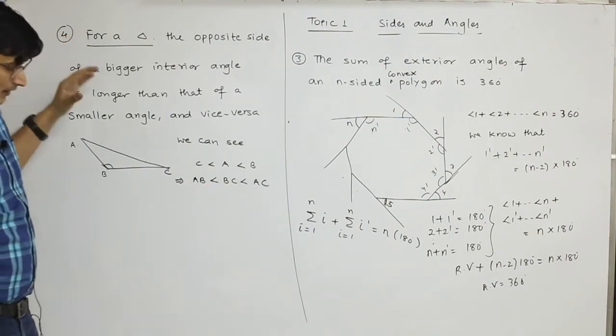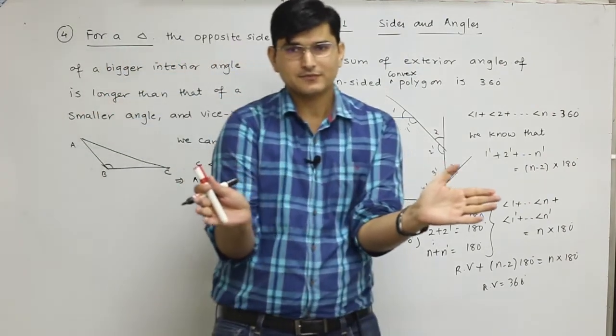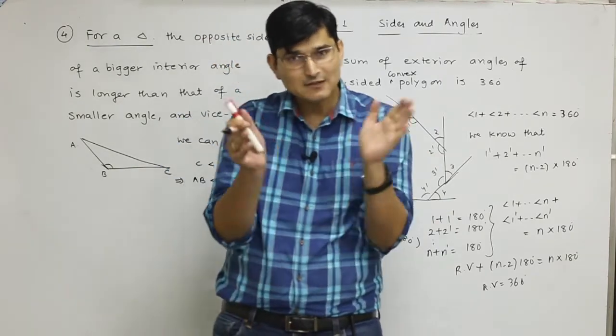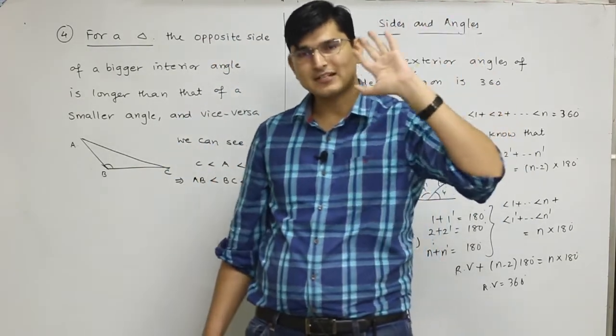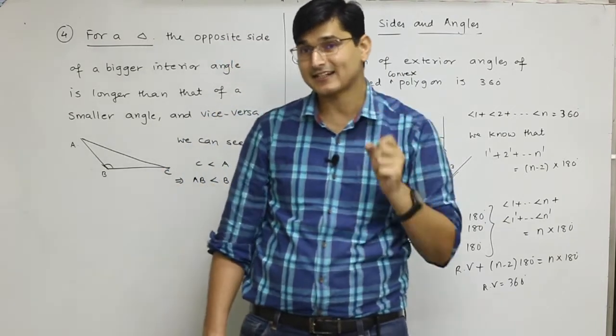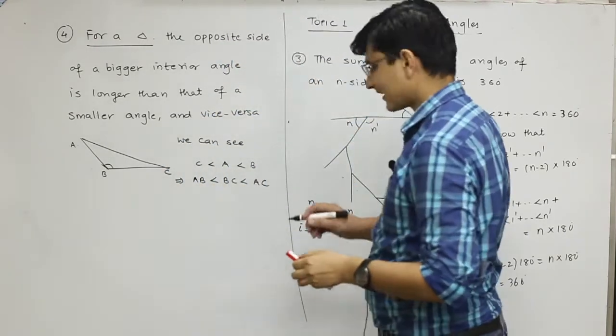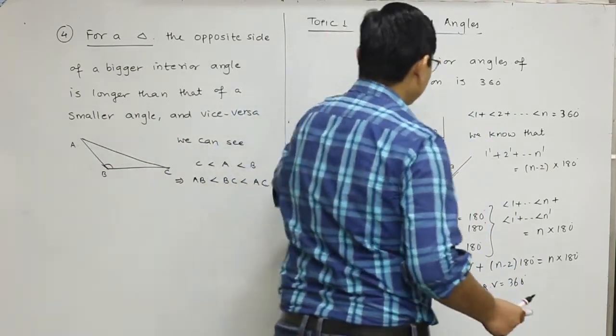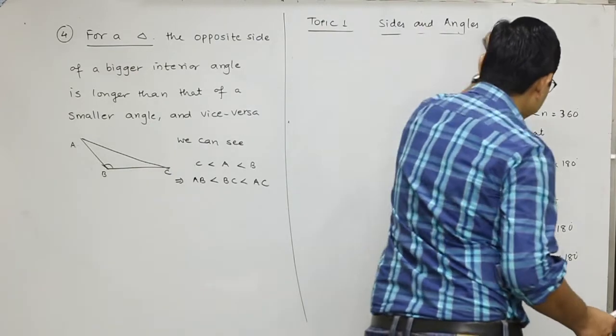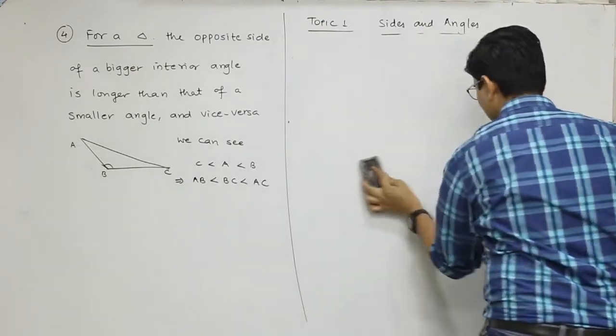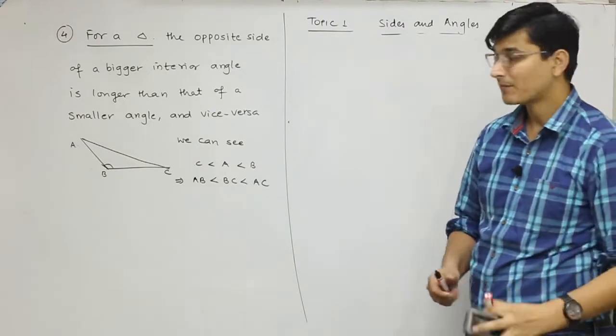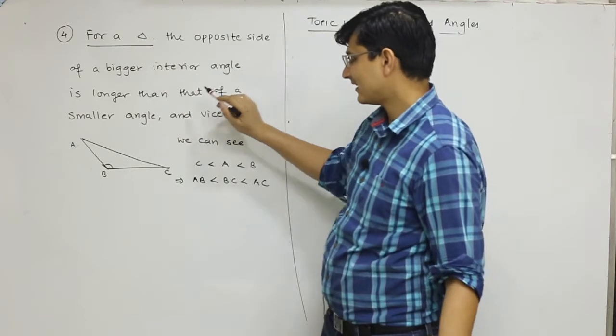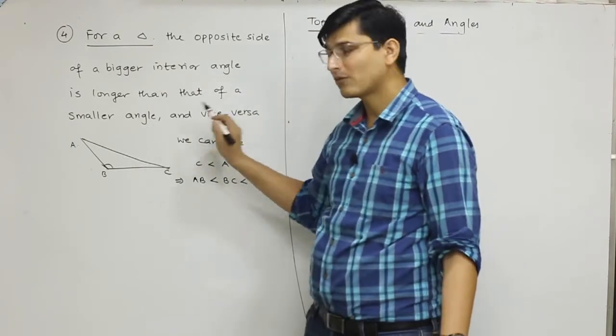The next property is that in a triangle, whichever side is bigger, its opposite angle will also be bigger. Whichever angle is bigger, its opposite side will also be bigger. You can think of a right angle triangle. In a right triangle, 90 degrees is the biggest angle, and the opposite side, the hypotenuse, is also the biggest.